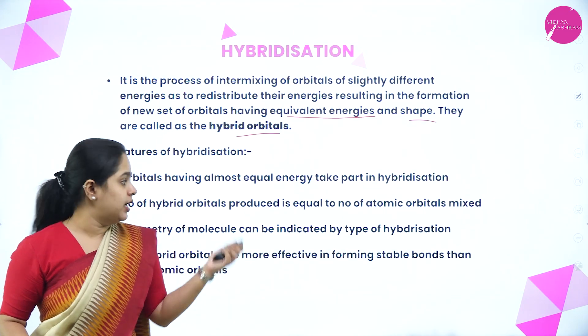sp3 hybridization involves 1s orbital and 3p orbitals intermixing to form 4 equivalent sp3 hybrid orbitals. This gives 25% s character and 75% p character, and the geometry is tetrahedral. As you can see, the s and px, py, pz orbitals all combine to form 4 sp3 hybrid orbitals.